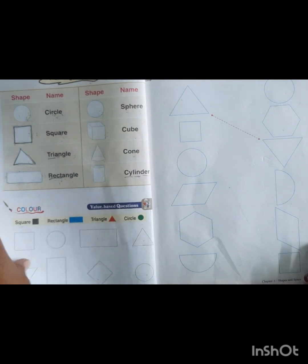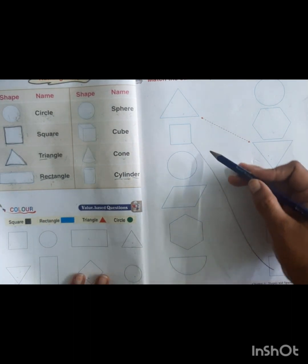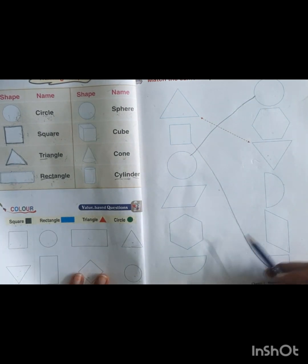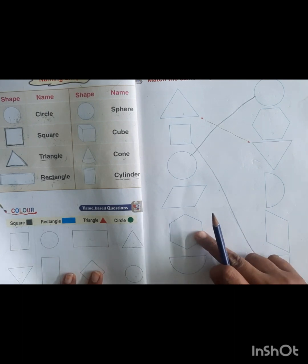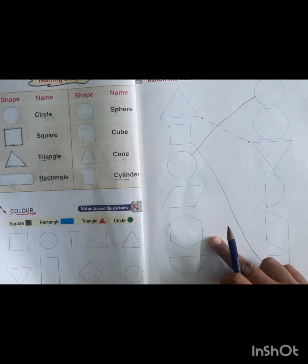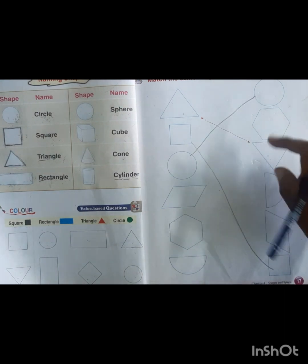Triangle with triangle, so we will match these. Square, and this is also a square, so we will match these. Circle with circle. This is hexagon - one, two, three, four, five, six sides. This is hexagon and this is hexagon, so we will match.